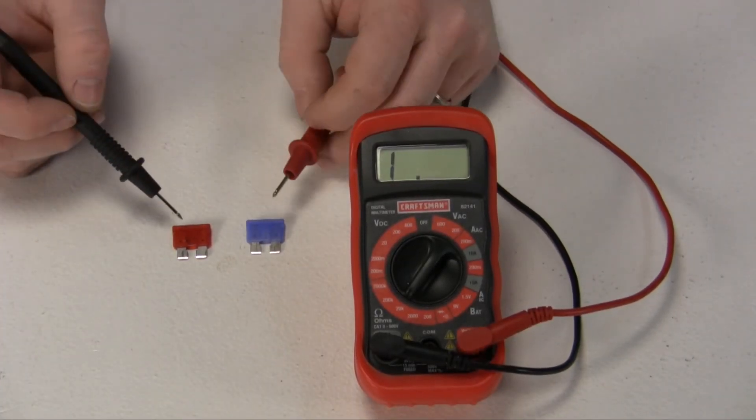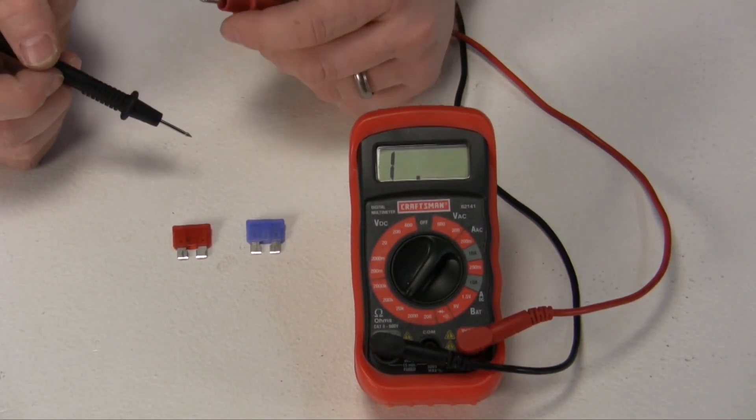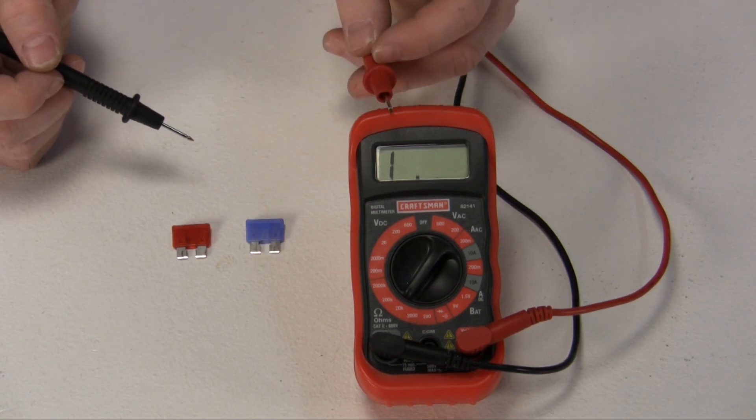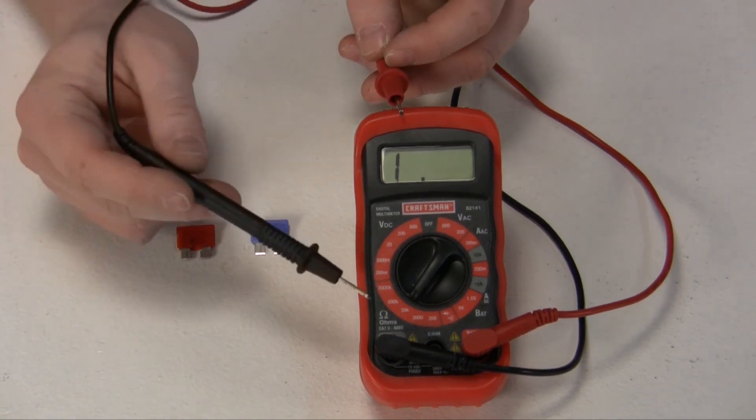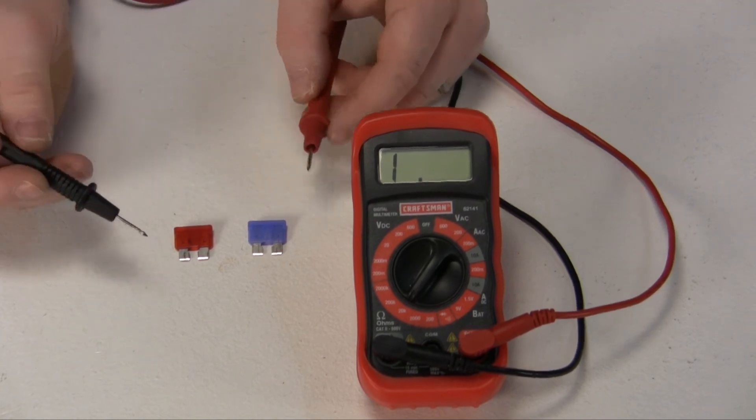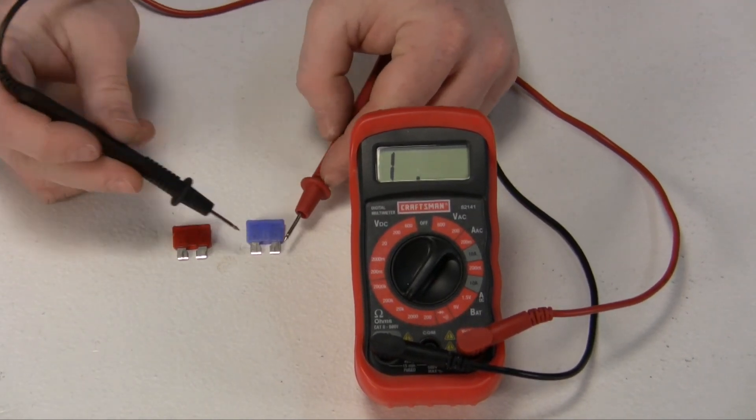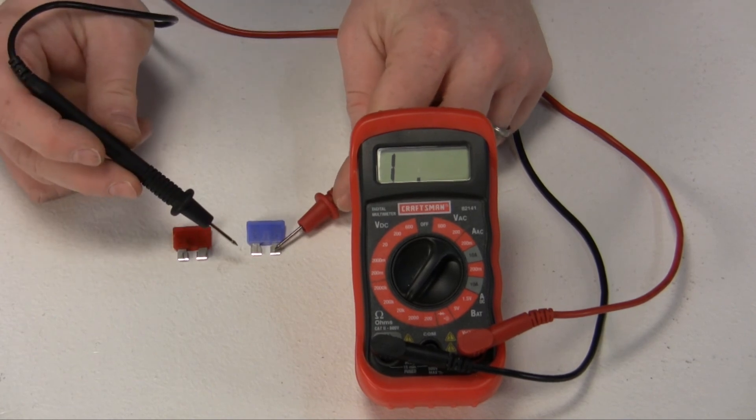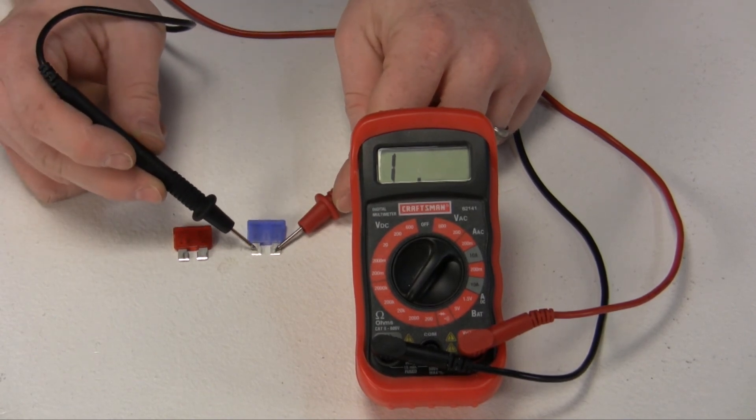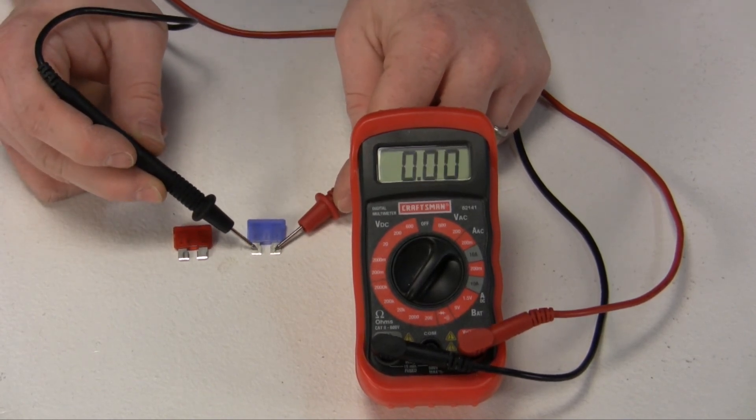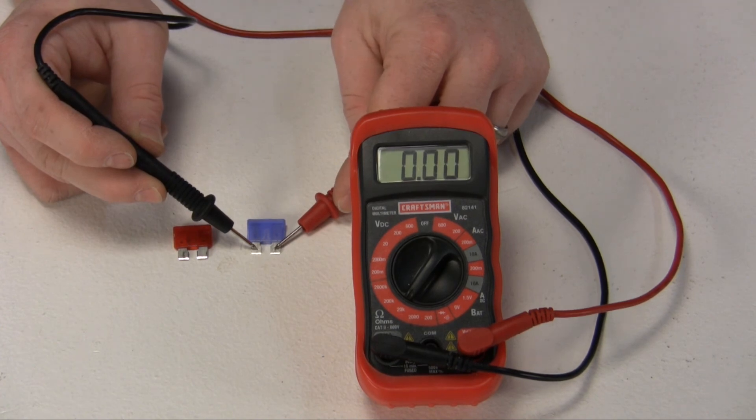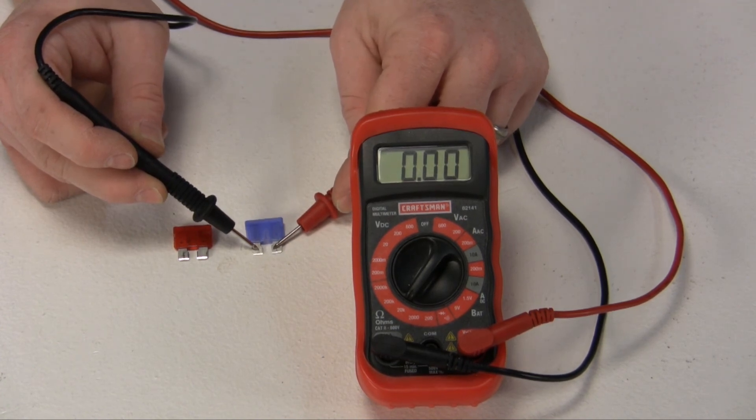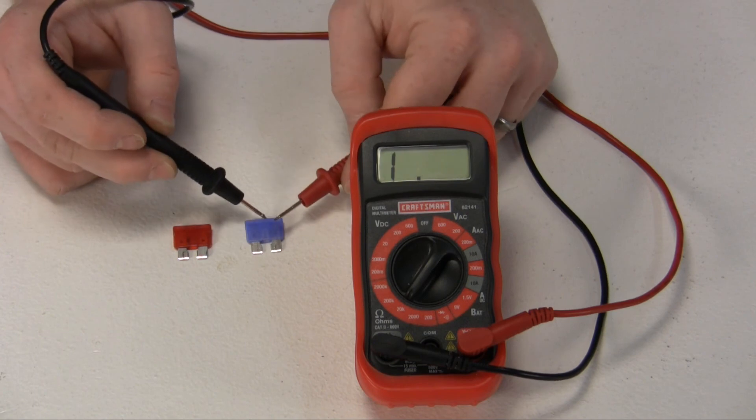It's not always easy to tell if a fuse is blown just by visually inspecting it. So in this case, we're going to use a meter. We're going to set it to the ohm setting that I showed you before and we're going to see if there's continuity across the two poles that plug into the fuse box. This first fuse here, put our red lead on one side and our black lead on the other. You'll notice the meter comes up with all zeros showing us that we do have continuity, which means this fuse is not blown, it's a good fuse.